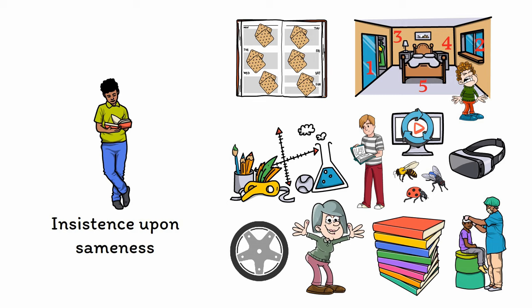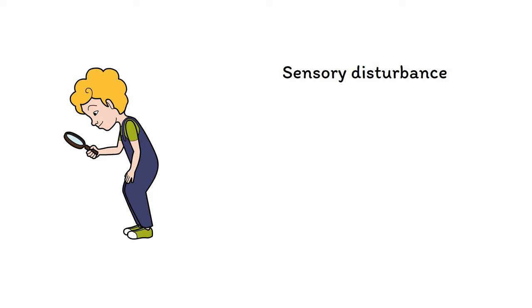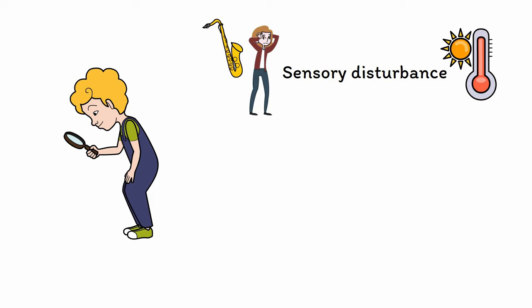Many people with autism exhibit other signs and symptoms that, while not required for a diagnosis, are quite common. A good example of this is a disturbance in sensory perception which can be seen in up to 80% of cases. These disturbances can often involve a combination of hypersensitivity to certain stimuli, such as an aversion to certain sounds or textures, as well as hyposensitivity to other stimuli, such as a high tolerance for pain or extreme temperatures.